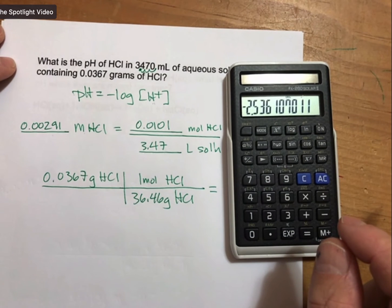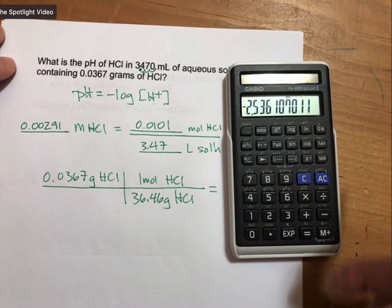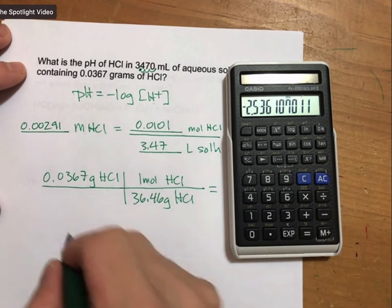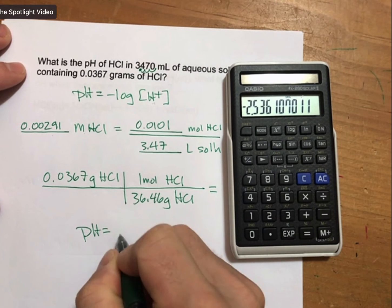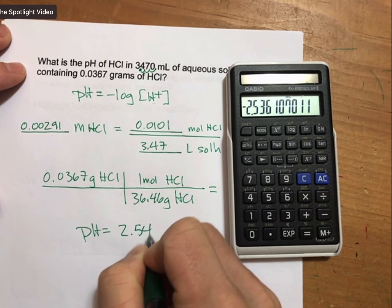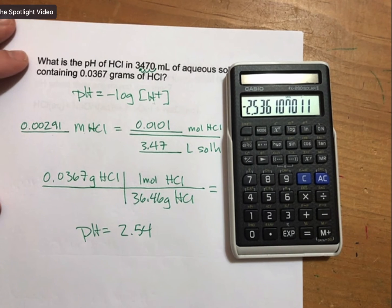And since I just hit my log button, I get negative 2.536 or negative 2.54. Take off the negative sign, and I'm left with 2.54.